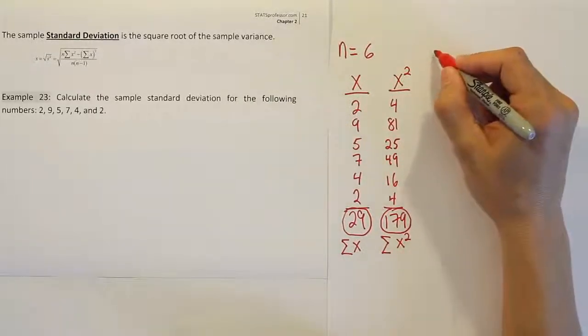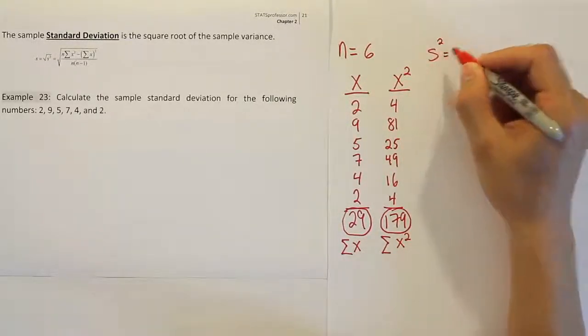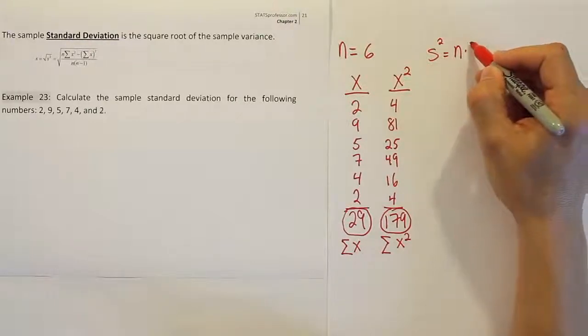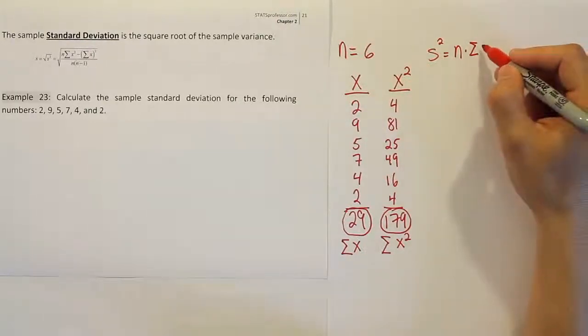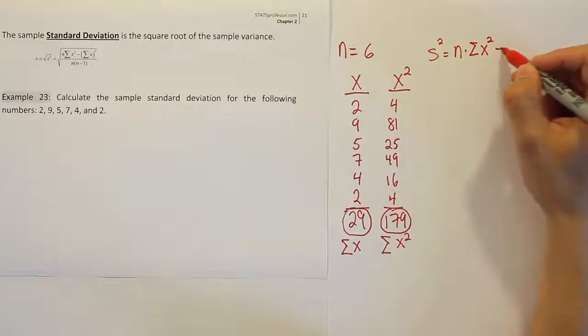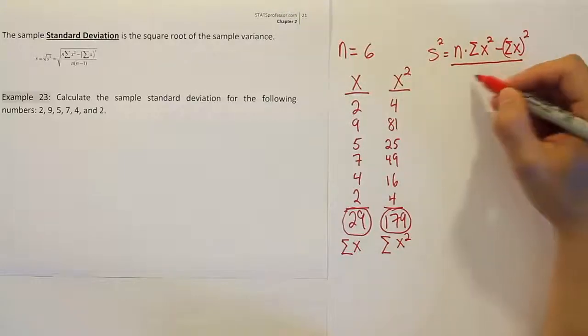All right, now from there we're going to calculate the sample variance. Remember that s² equals n times the summation of x squared minus the summation of x quantity squared, divided by n times n minus 1.